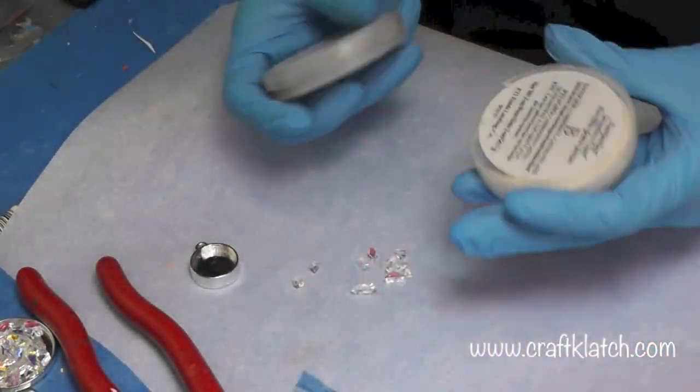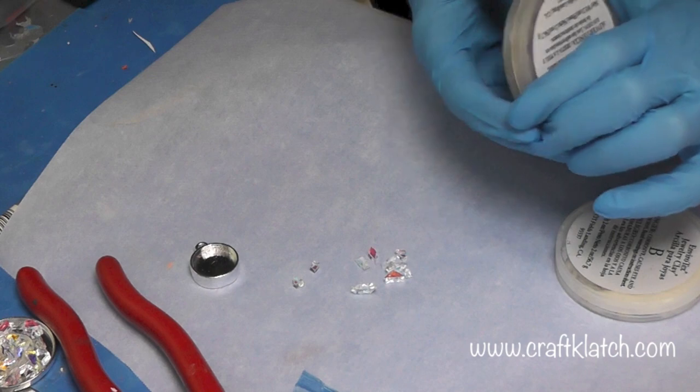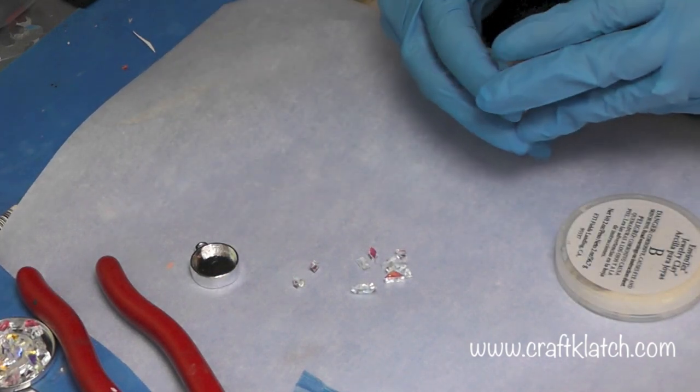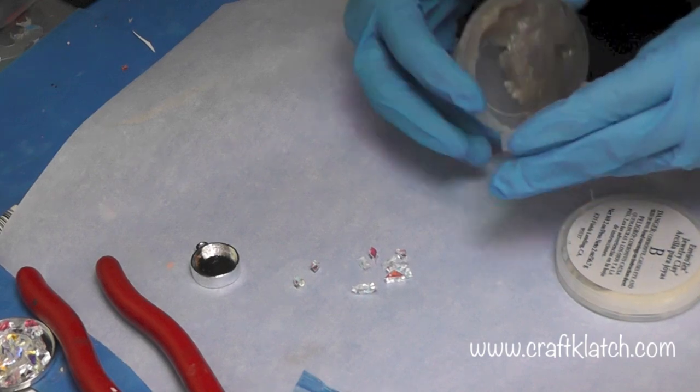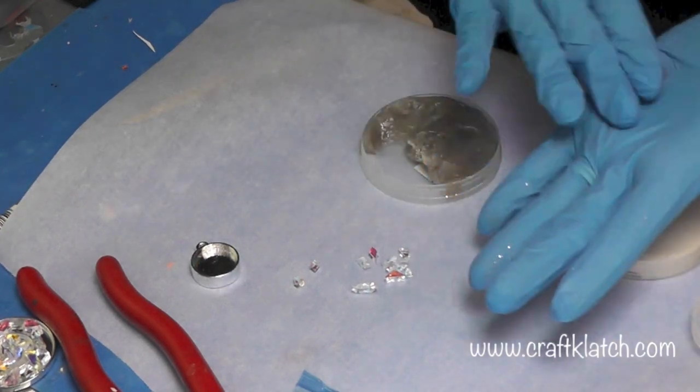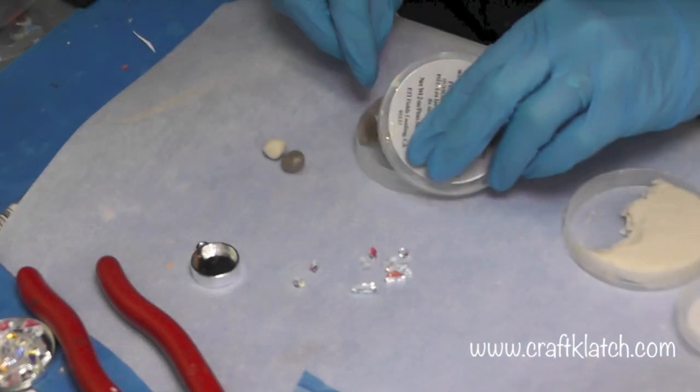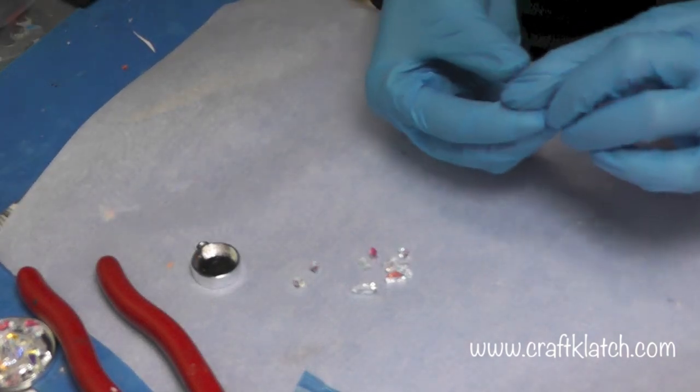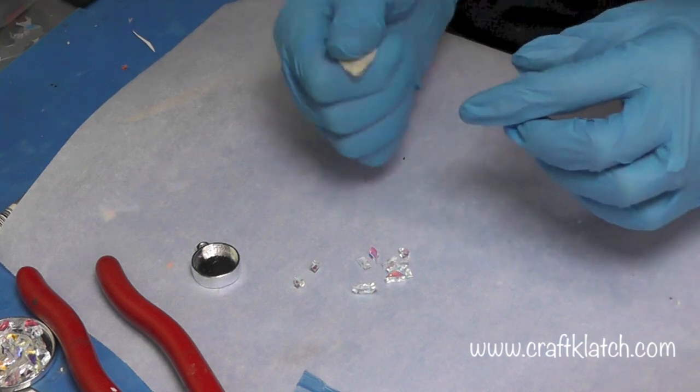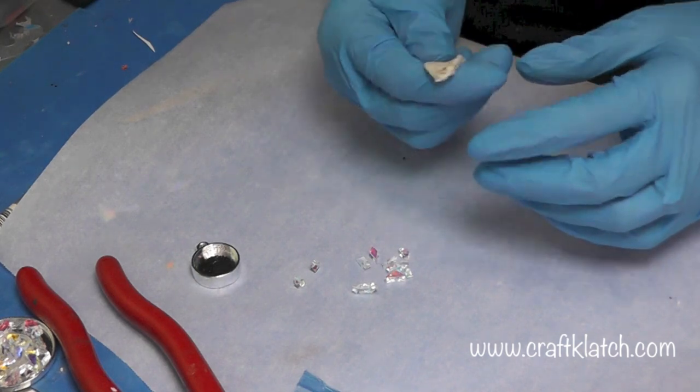I'm going to be using the jewelry clay. It comes in a part A and a part B, and we're just really going to need very little to fill up that bezel because it's so small. So I'm going to take equal parts of both. That looks pretty equal. And now I'm going to mix them together. You want to mix them and knead them until there are no stripes going through there anymore and it's one solid color.